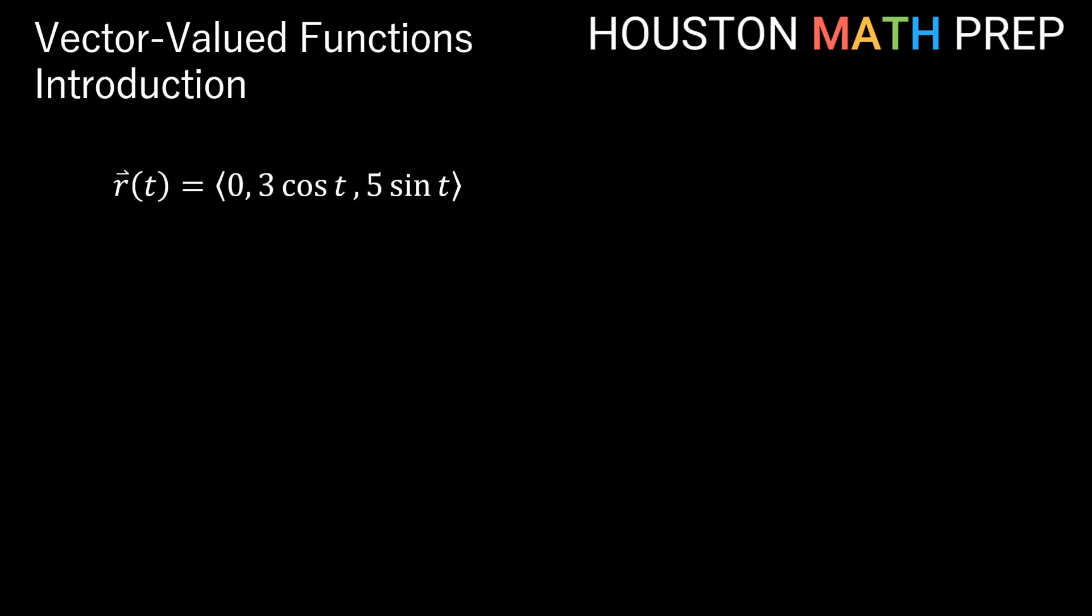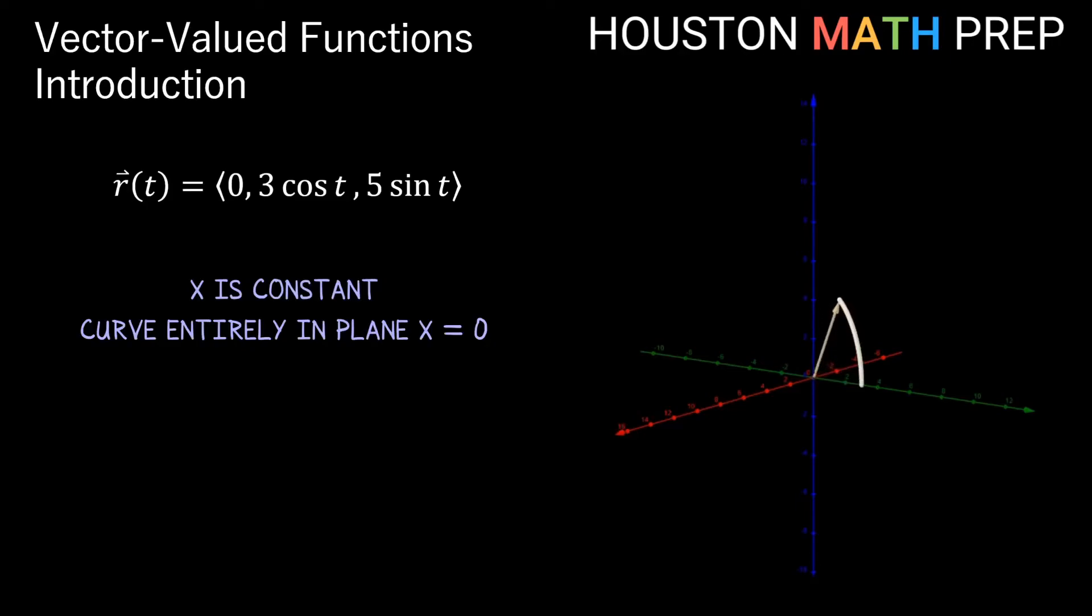Here's another function r equals (0, 3cos(t), 5sin(t)). We can see right away in our first component that we have the constant 0. So this means that the curve in space lies entirely in the plane x equals 0.